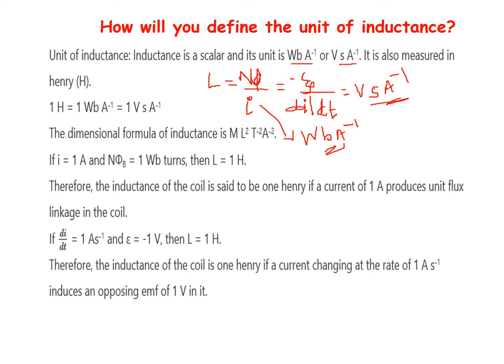1 Henry is equal to 1 Weber ampere to the power of minus 1, and that is equal to 1 volt second ampere to the power of minus 1.